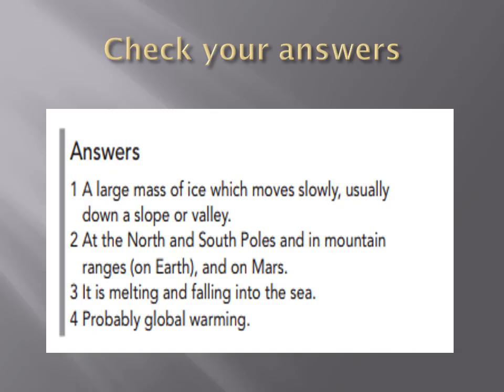Now check your answers. A glacier is a large mass of ice which moves slowly, usually down a slope or a valley. They are found at the north and south poles, on top of mountains, and on Earth and on Mars. The glaciers are melting and falling into the sea — that's what's happening. And why? Probably because of global warming.